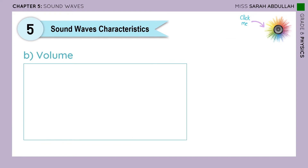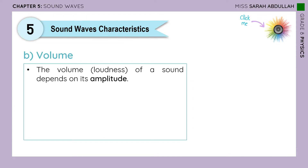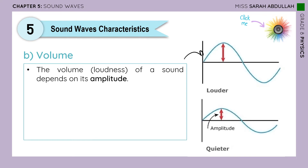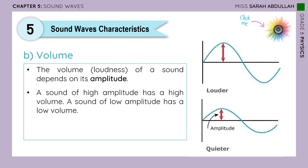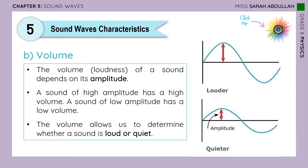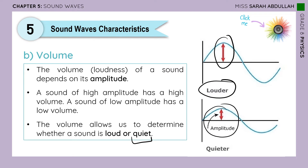Another characteristic is volume. The volume or loudness of a sound depends on its amplitude. The bigger the amplitude, the louder the sound; the smaller the amplitude, the quieter the sound. Volume allows us to determine whether a sound is loud, with a big amplitude, or quiet, with a small amplitude. Let's look at the simulation to see how loudness depends on amplitude.